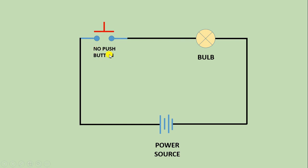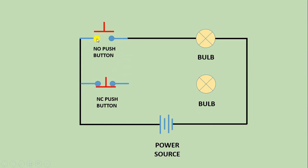Now let's move forward. I am using one more bulb here, and to glow this bulb I am using an NC push button. You can see the symbol of the NC push button — here the circuit is already complete. In the NO push button there is a break in the circuit, but in the NC push button the circuit is complete. Power is supplied to the NC push button, and from the other terminal a wire connects to provide positive power supply to the bulb.